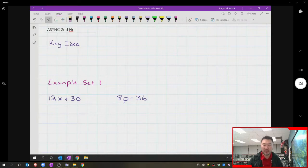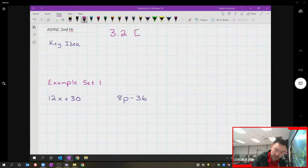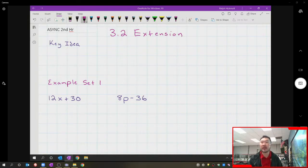With that being said, let's switch it up to my screen. You should see that I am in the async second hour 3.2 extension. Once again, we are doing 3.2 extension and that is in your foldable. Go ahead and take that out and ensure that as you're watching this video, feel free to pause and review.